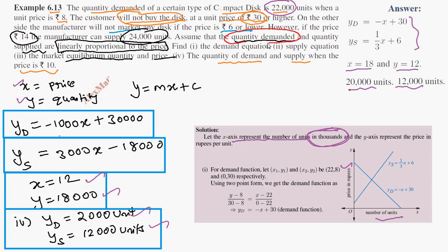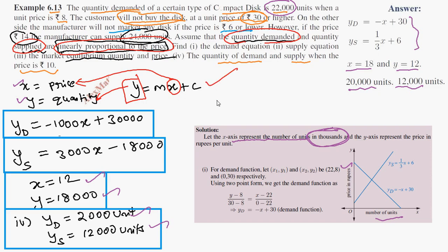Quantity demanded and quantity supplied are both linearly proportional to the price. Since price is X and quantity is Y, we use the Y = MX + C form. This gives us the demand and supply equations. So the answer is correct.